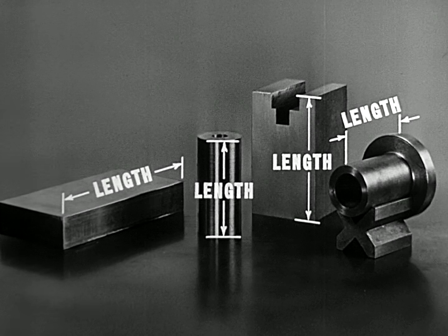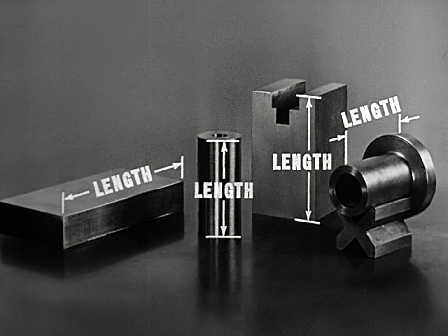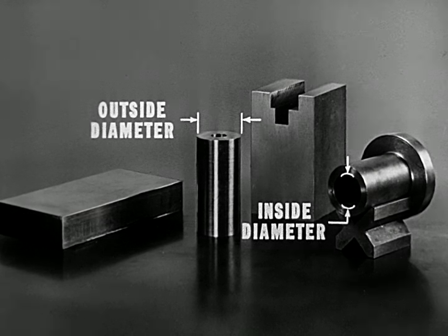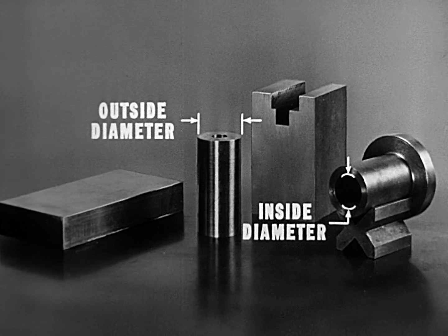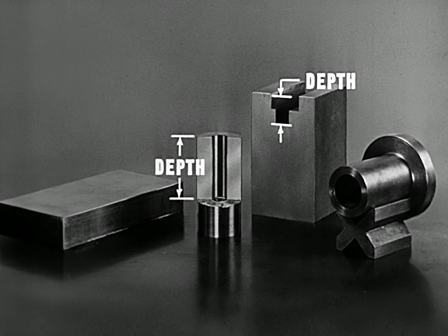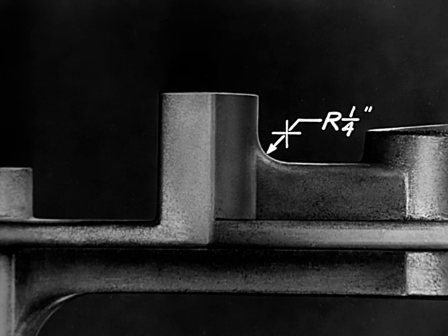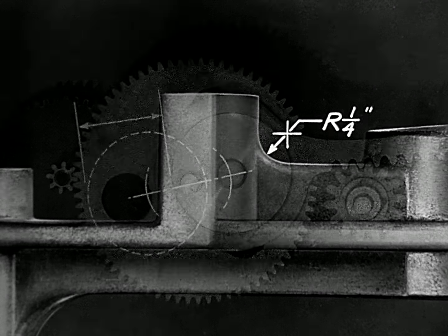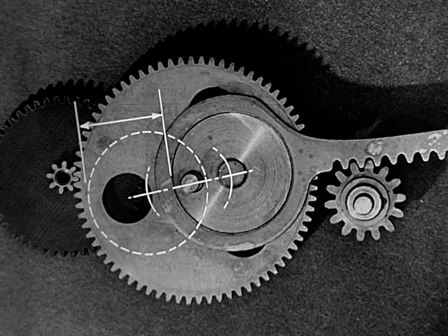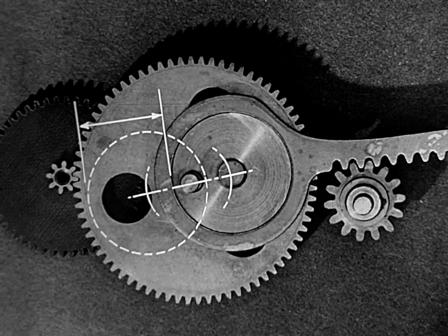Dimensions are always measurements of distance, such as length, and such as width, which includes diameters, and such as the depth of slots and of holes. The radius of a fillet, the throw of a cam or an eccentric, is a measurement of distance.